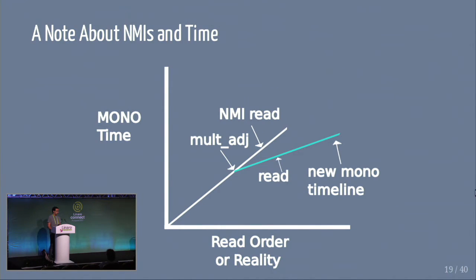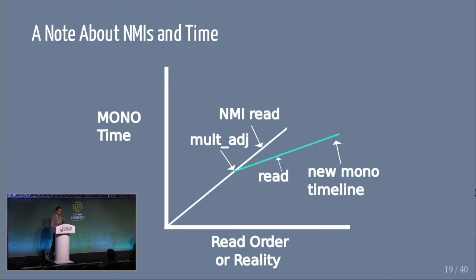A note about this: when we have timekeeping we also do the mult adjustment for NTP. If we're not taking any locks, that means we need to update the timekeeping's mult value, which changes the frequency. So if someone's reading it in an NMI context and we're also adjusting the mult value, the time may look like it went backwards or forwards. They may see time go back and forth and basically have to accept this fact, because we can't do anything better than this.